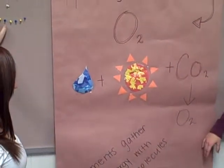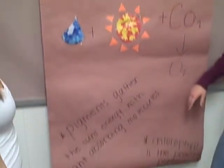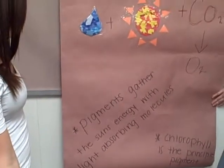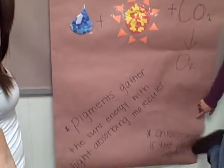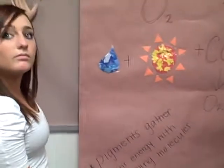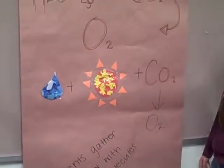So you do have your three-dimensional component. Yes. But your formula is incomplete. You do have your pigments. Do you know what the pigment is that gathers the sun's energy? Chlorophyll. It is chlorophyll. That's correct.